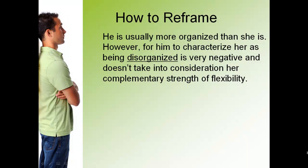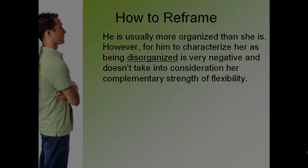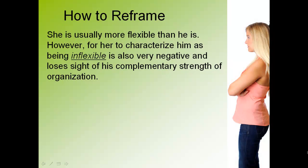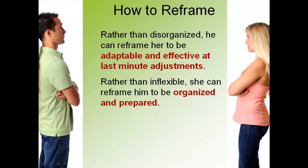Let's look at an example of how to reframe. He is usually more organized than she is; however, for him to characterize her as disorganized is very negative and doesn't take into consideration her complementary strength of flexibility. She is usually more flexible than he is; however, for her to characterize him as inflexible also loses sight of his complementary strength of organization. Rather than disorganized, he can reframe her as adaptable and effective at last-minute adjustments. Rather than inflexible, she can reframe him as organized and prepared. Now they can start to see each other in a more positive and accurate light, so the relationship will get back on track. This is what reframing looks like.